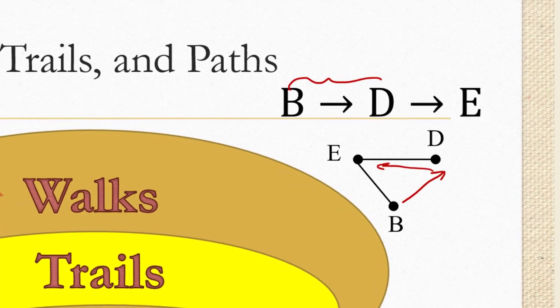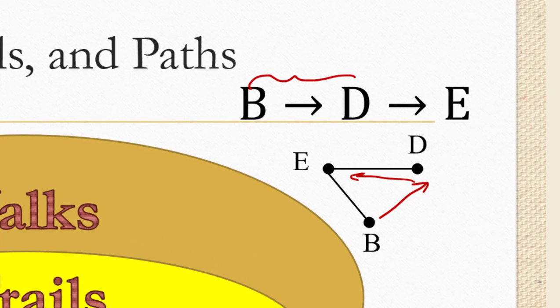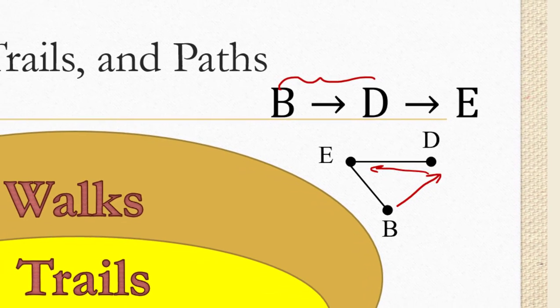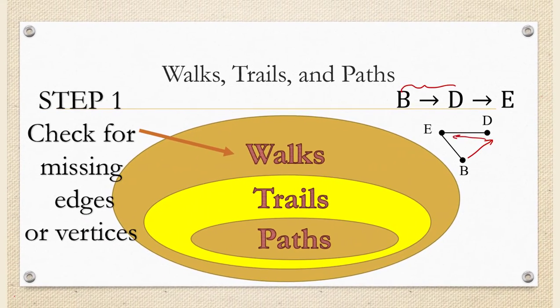For example, here we have a sequence B to D to E, but in the graph here you don't have an edge between B and D. So that's a problem. So that's actually not even a walk. Remember the only rule for a walk is that it has to stay on the graph. This one goes off the graph, so it's not a walk. So you know it's not a trail or a path.